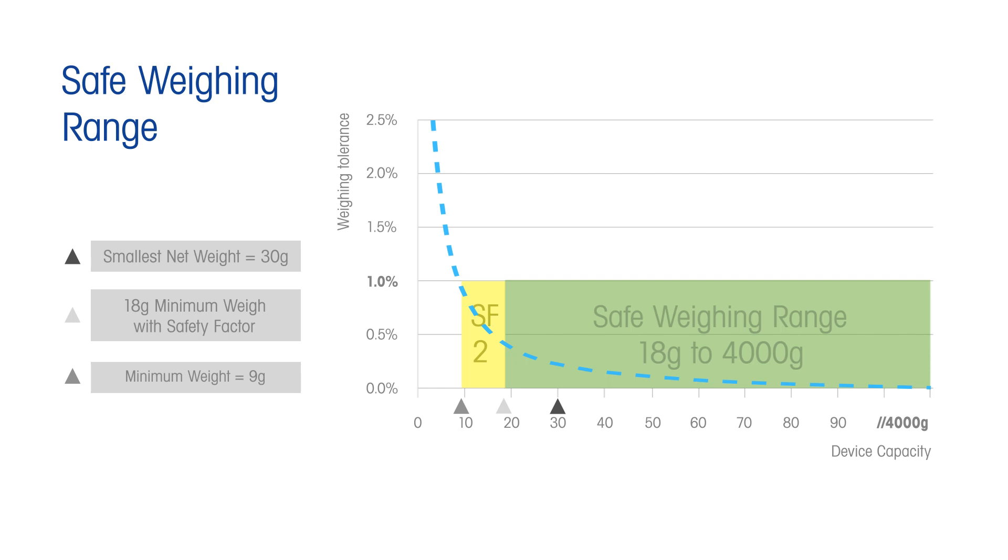Weighing amounts between 9 and 18 grams will not achieve the required safety factor of 2 and therefore are a risk. Weighing under 9 grams means that these measurements could be outside the weighing requirement of 1% and could affect quality.